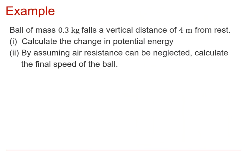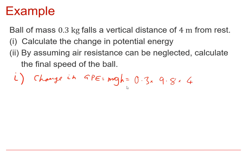Here's an example where we might expect this to be the case. A ball of mass 0.3 kilograms falling through a distance of 4 metres from rest. The first thing we're asked to do is calculate the change in potential energy, which is given by MGH. So that's 0.3 times G, which is 9.8, times the height of 4 metres, and that comes out as 11.76 joules.